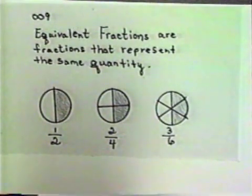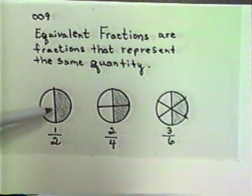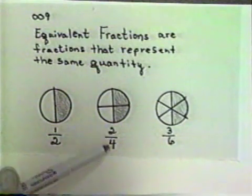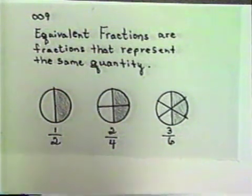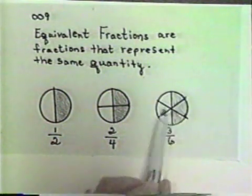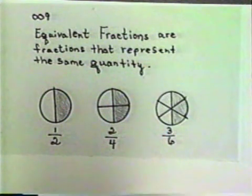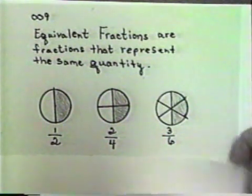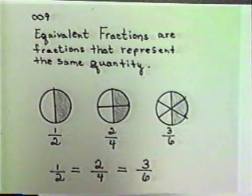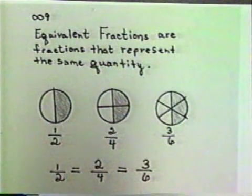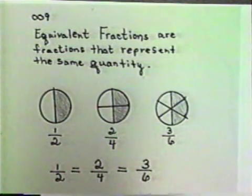I've drawn here a picture to represent three separate fractions. First, we have the fraction one-half, so one out of the two pieces is shaded. Here we have the fraction two-fourths, in which two out of four pieces are shaded. And last, we have the fraction three-sixths, in which three out of six pieces are shaded. If you look closely, you'll see that the same amount of the circle is shaded each time. So one-half, two-fourths, and three-sixths all represent the same fraction — they can all be said to be equal to each other, or they are equivalent fractions.